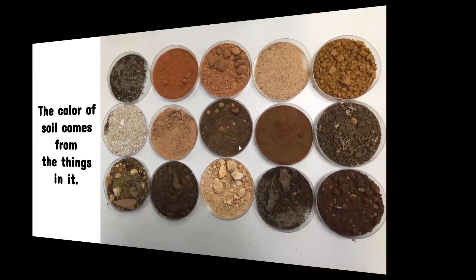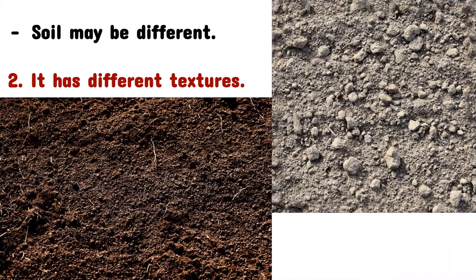Let us move to the following slide. Soil may be different — it has different textures. Texture refers to the things you can find in soil that make it feel different. As you can see here, we have many rocks in it, and these rocks may make the soil unsuitable for plants to grow. We have some soil with a bit big pieces of rocks, and here we have very small, tiny pieces of rocks. The texture of soil differs from one soil to another.